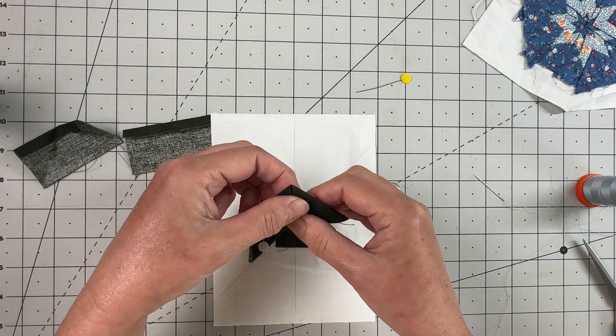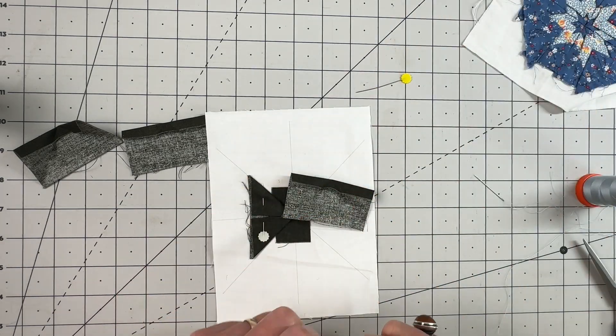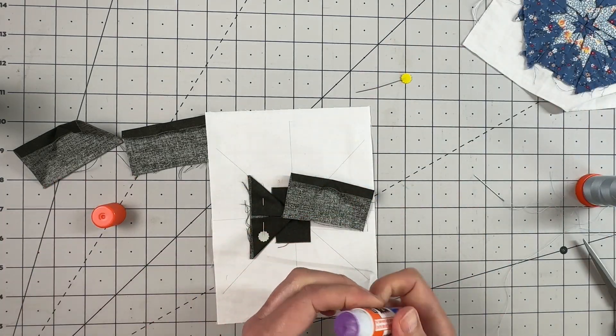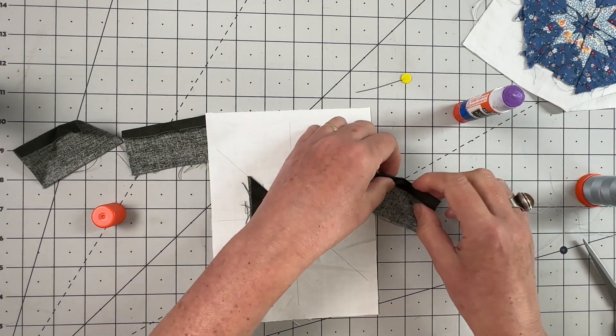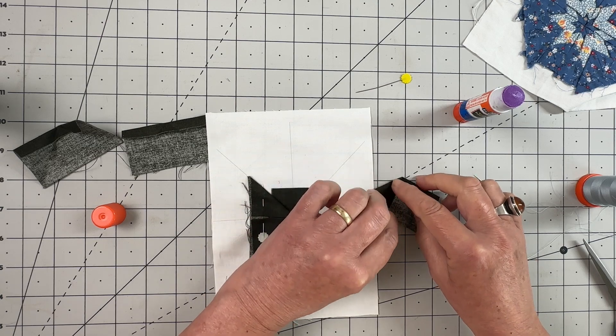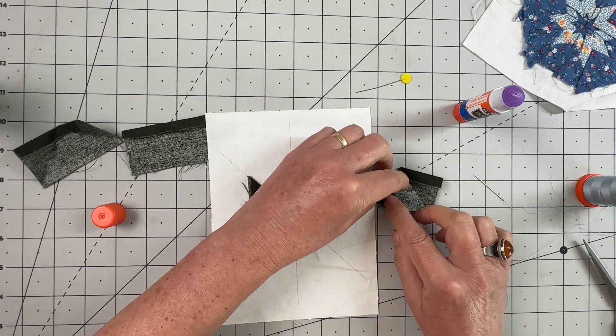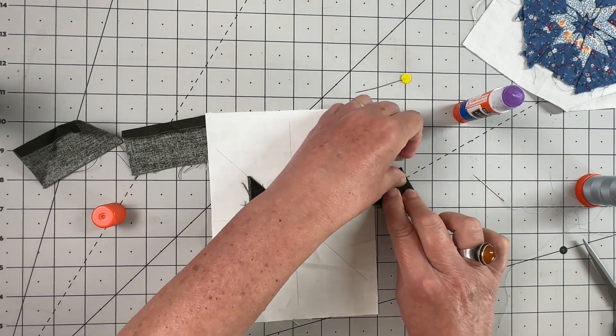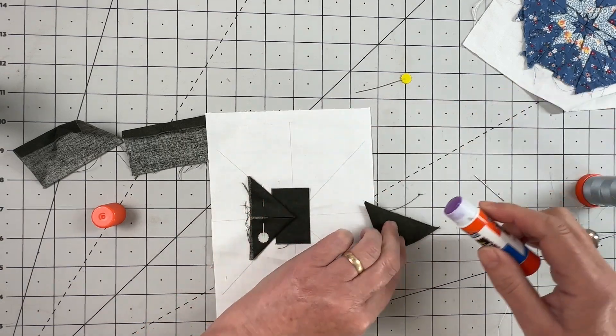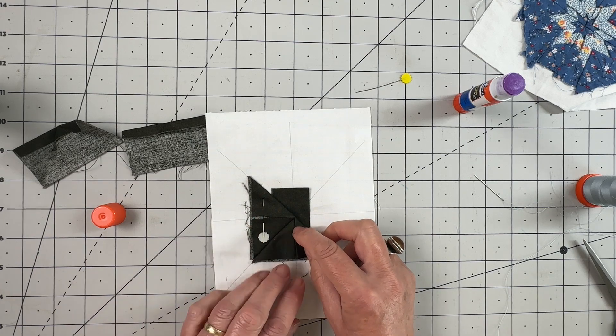This is where if you wanted to, you could use your glue just to hold those in place to stop them from springing out. Just put a little dab on the back like that and then place that.